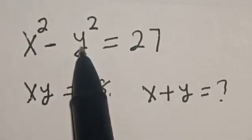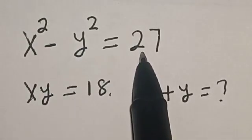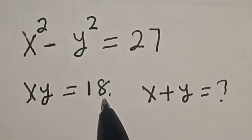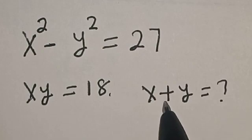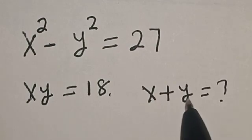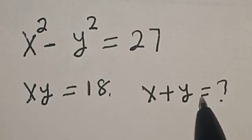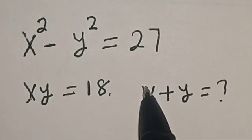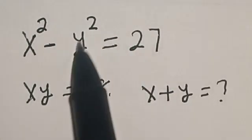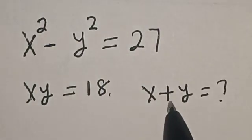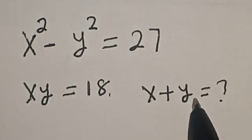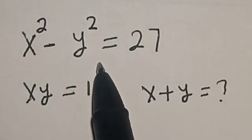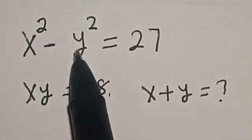x squared minus y squared is equal to 27, and xy is equal to 18. What is the value of x plus y? Hi everyone, welcome to my class. In this class, we want to find the value of x plus y from this given nice Olympiad equation.